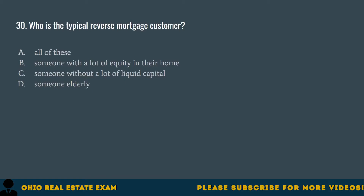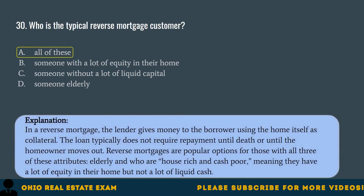Question 30. Who is the typical reverse mortgage customer? A. All of these. B. Someone with a lot of equity in their home. C. Someone without a lot of liquid capital. D. Someone elderly. The correct answer is A. All of these. In a reverse mortgage, the lender gives money to the borrower using the home itself as collateral. The loan typically does not require repayment until death or until the homeowner moves out. Reverse mortgages are popular for those who are elderly, house-rich, and cash-poor.